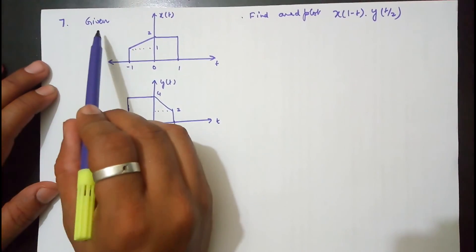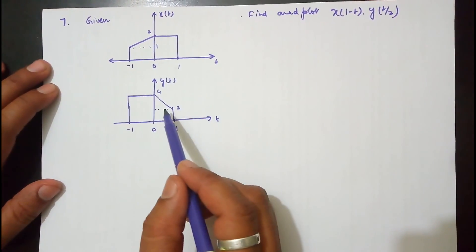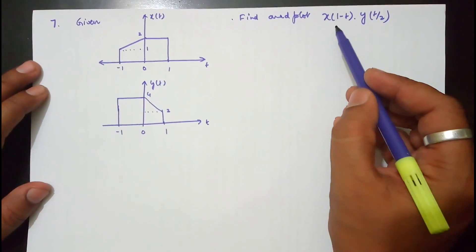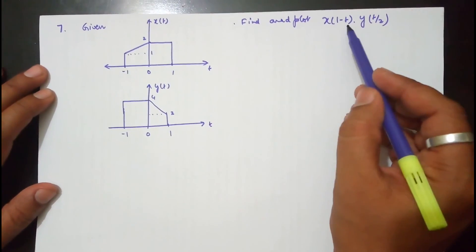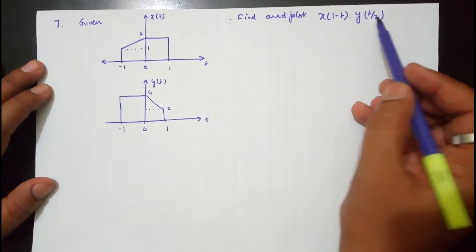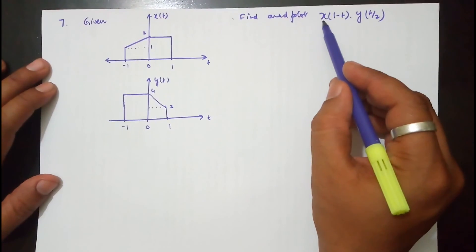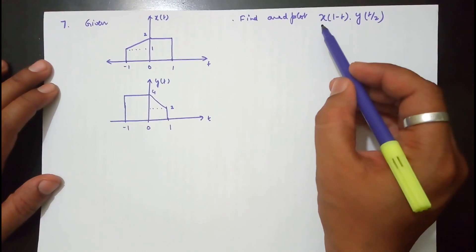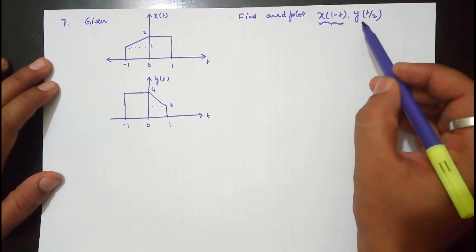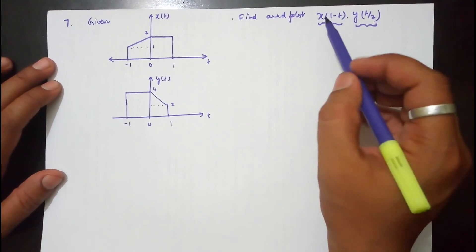In this problem, you are given x(t) and y(t) and asked to find and plot the product of x(1-t) and y(t/2). To compute the product, we need to first draw x(1-t) and y(t/2).